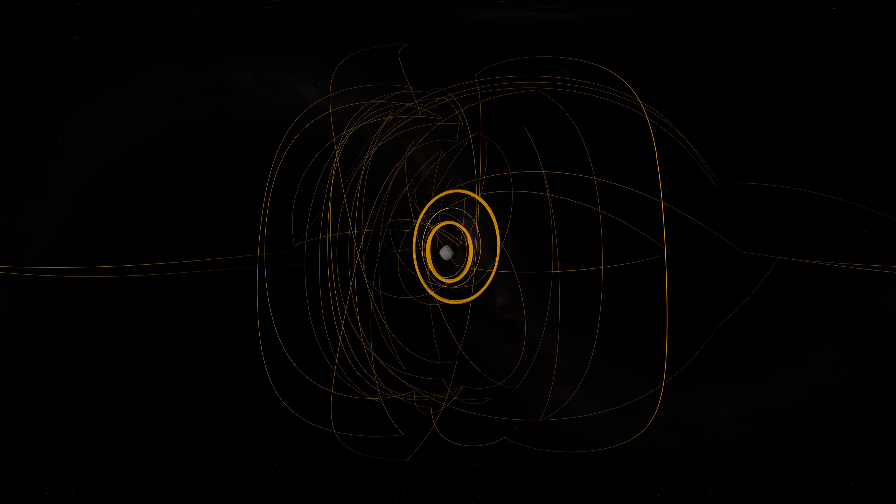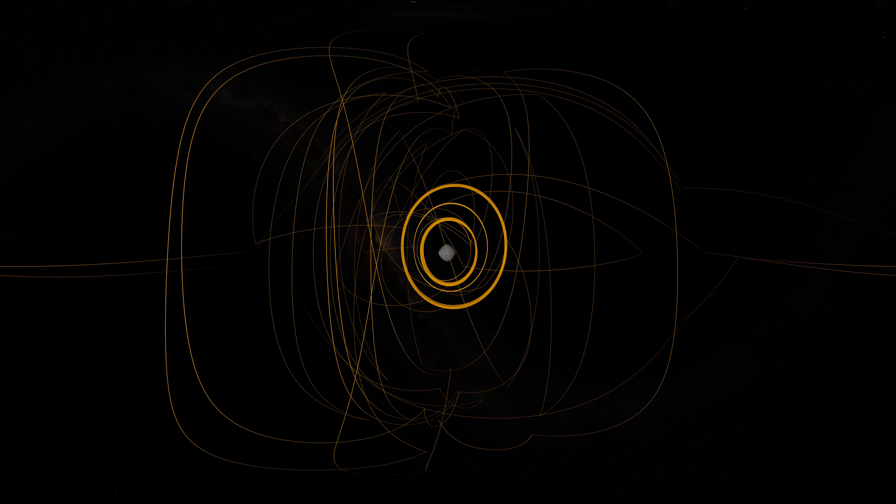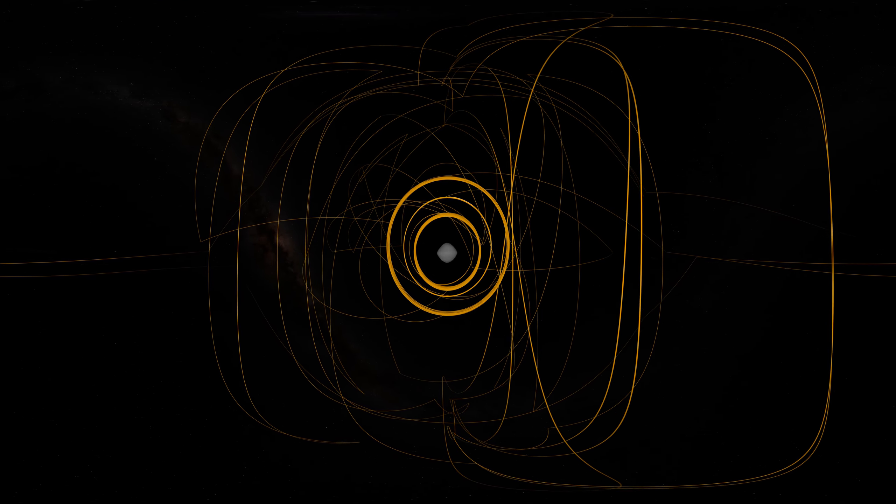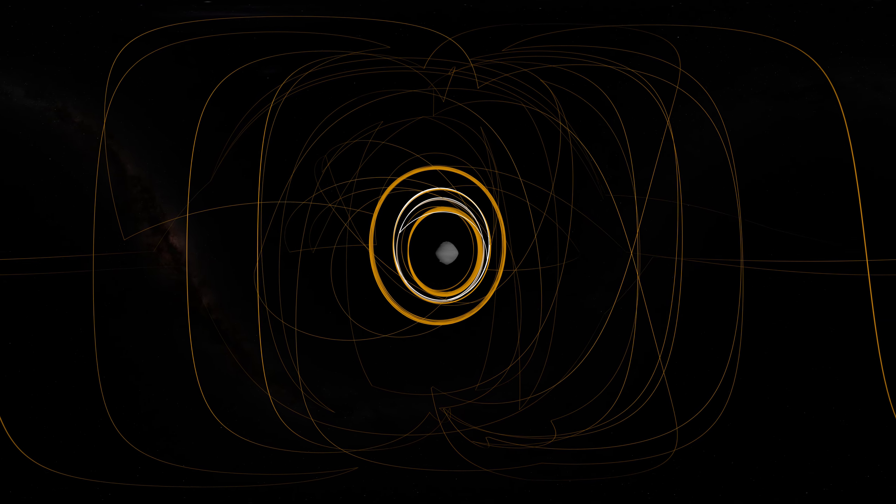OSIRIS-REx concluded its first year at Bennu back in orbit, circling the asteroid's terminator, or boundary between day and night. Here, outside forces acting on the spacecraft are balanced, allowing it to orbit within the same plane over time.